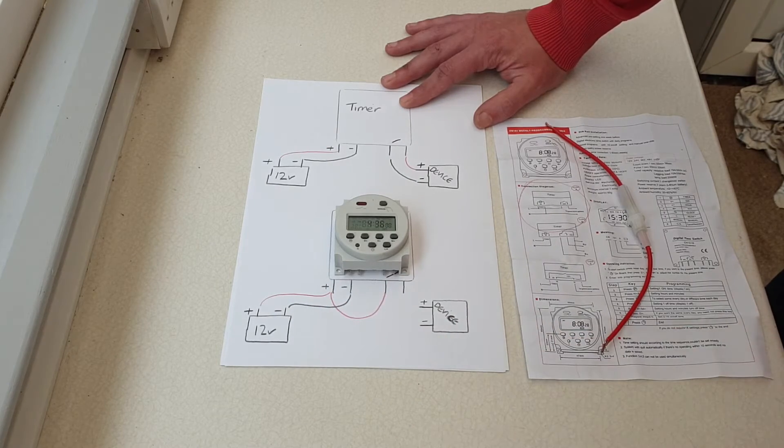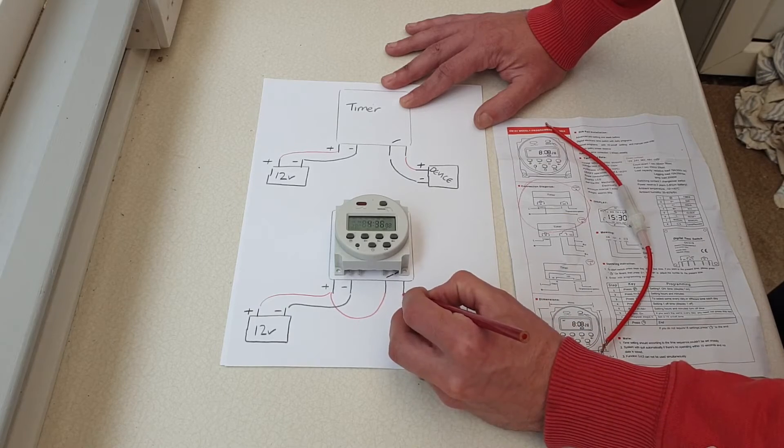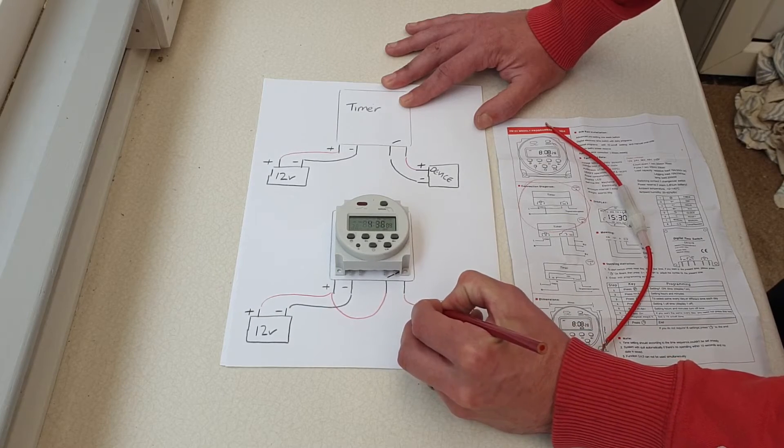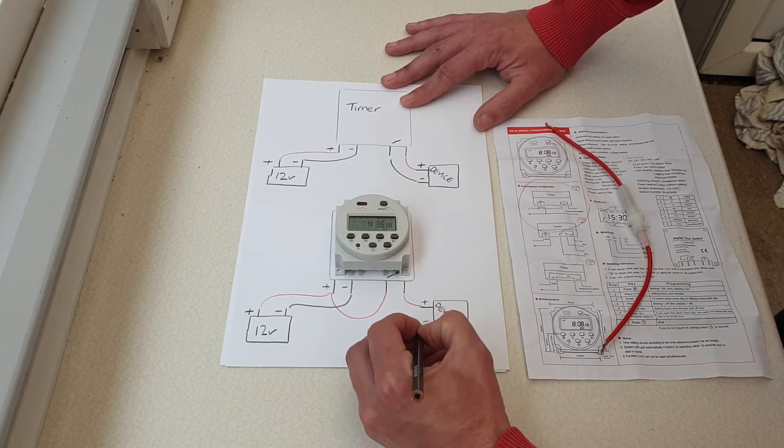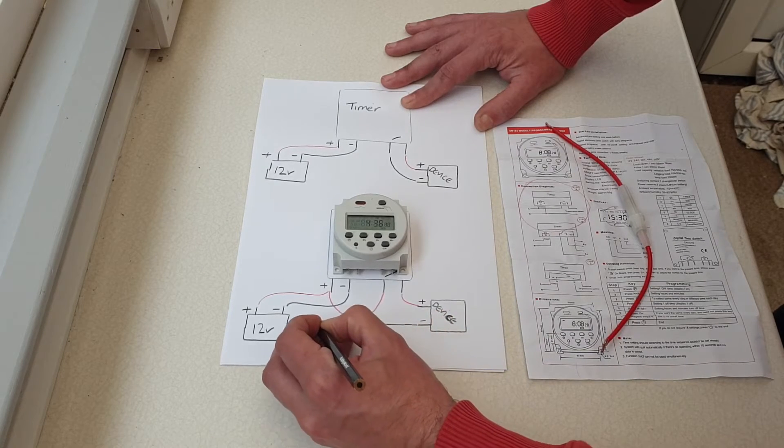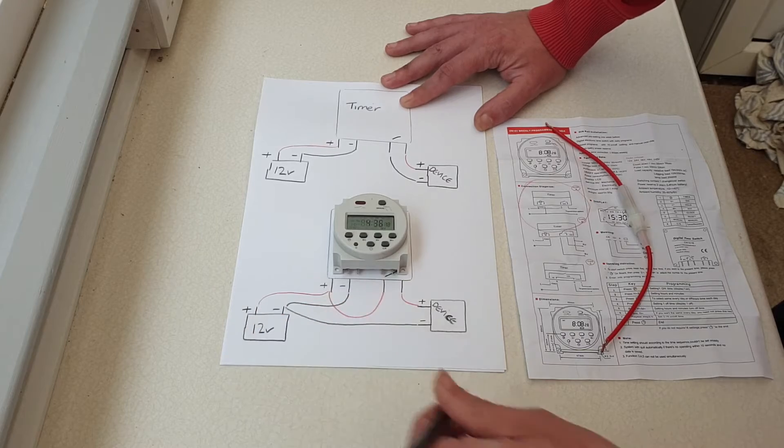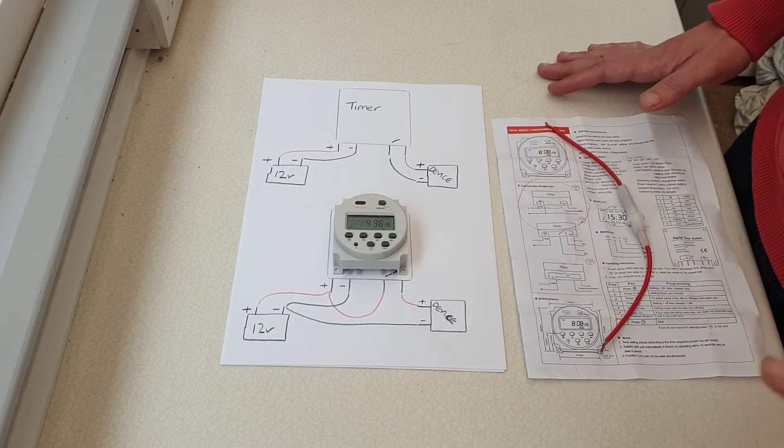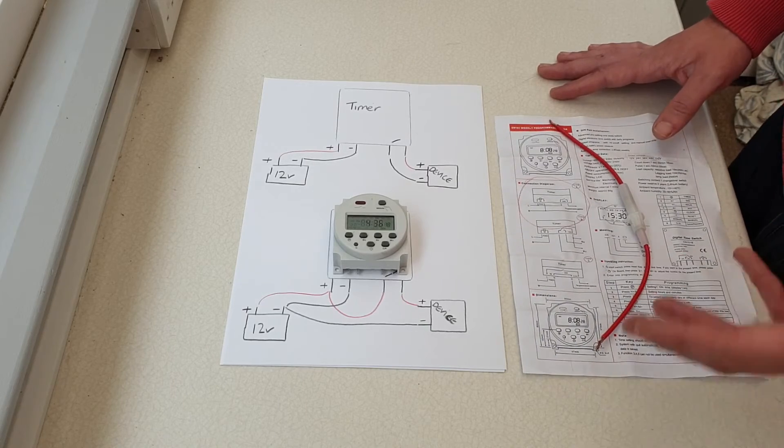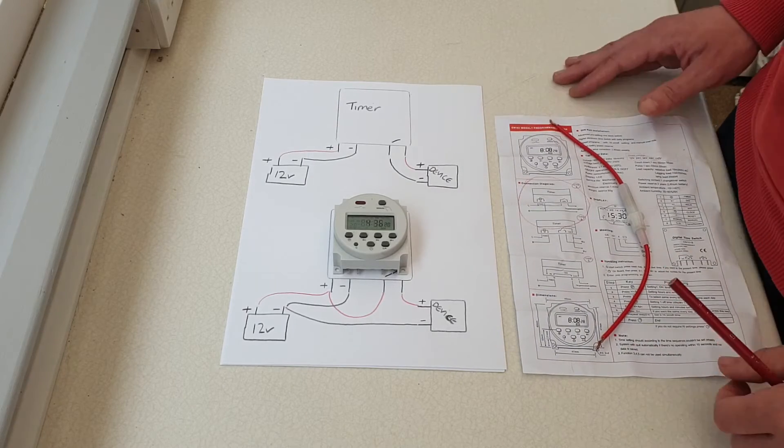What you then do is connect the out terminal to the positive of whatever it is you're powering, and the negative of whatever you're powering goes all the way back to the negative terminal on the battery. So that's the correct wiring procedure to get this to work, and I'll show you that in practical form in just one second.